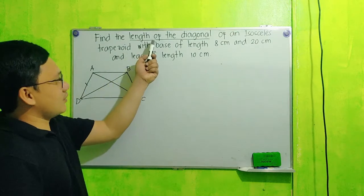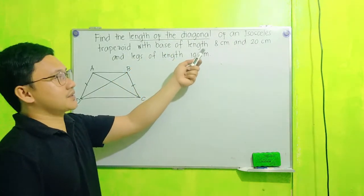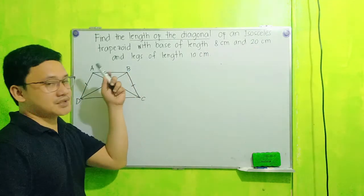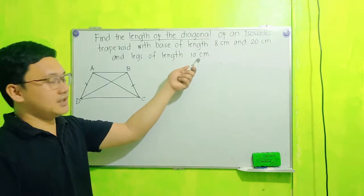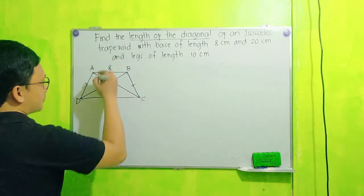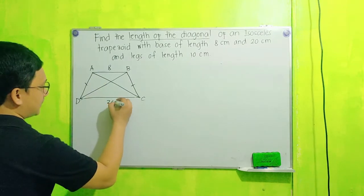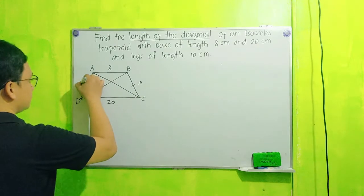Find the length of the diagonal of an isosceles trapezoid with base of lengths 8 cm and 20 cm, and leg length is 10 cm. So this is 8, base 1 natin and base 2 natin is 20 and yung legs natin is 10.